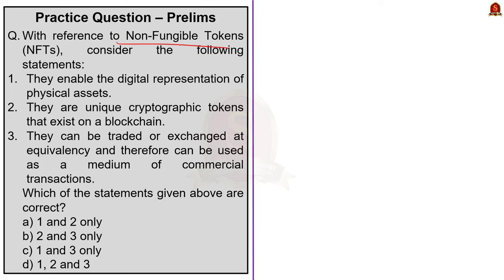With reference to non-fungible tokens, consider the following statements: they enable the digital representation of physical assets; they are unique cryptographic tokens that exist in a blockchain; they can be traded or exchanged at equivalence and therefore can be used as a medium of commercial transaction. The correct answer is option A: 1 and 2 only. Statements 1 and 2 are correct. Statement 3 is incorrect because unlike cryptocurrency, NFTs cannot be exchanged at equivalence.